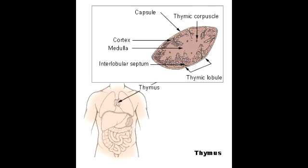Where does the positive and negative selection of T-cells occur? The negative and positive selection of T-cells occurs in the thymus' corticomedullary junction.